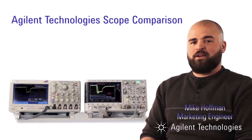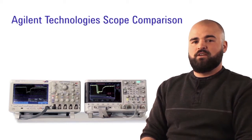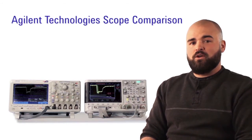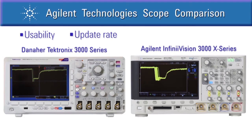Hello, my name is Mike Hoffman, Product Marketing Engineer with Agilent Technologies. In this video, we will compare the Agilent 3000X series and the Tektronix 3000 series oscilloscopes. We'll look at usability, update rate, memory, and system architectures of each scope. Let's begin.